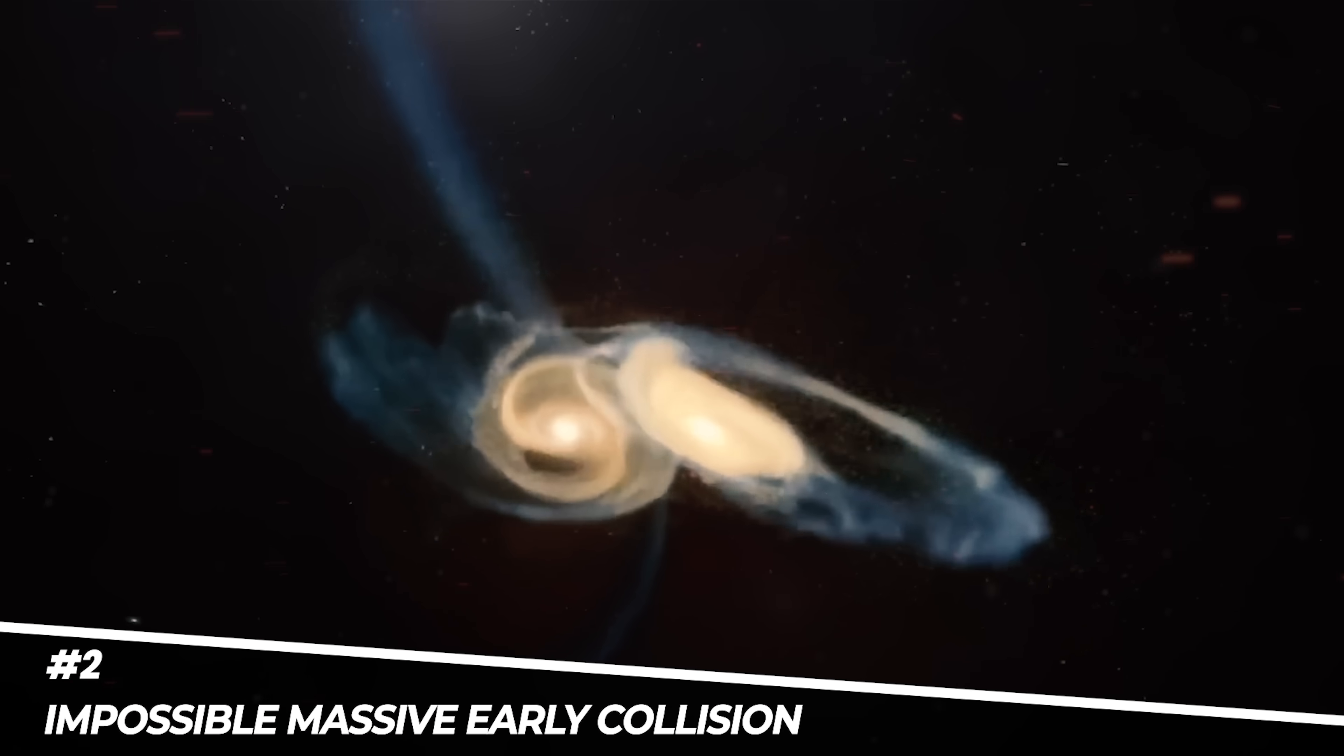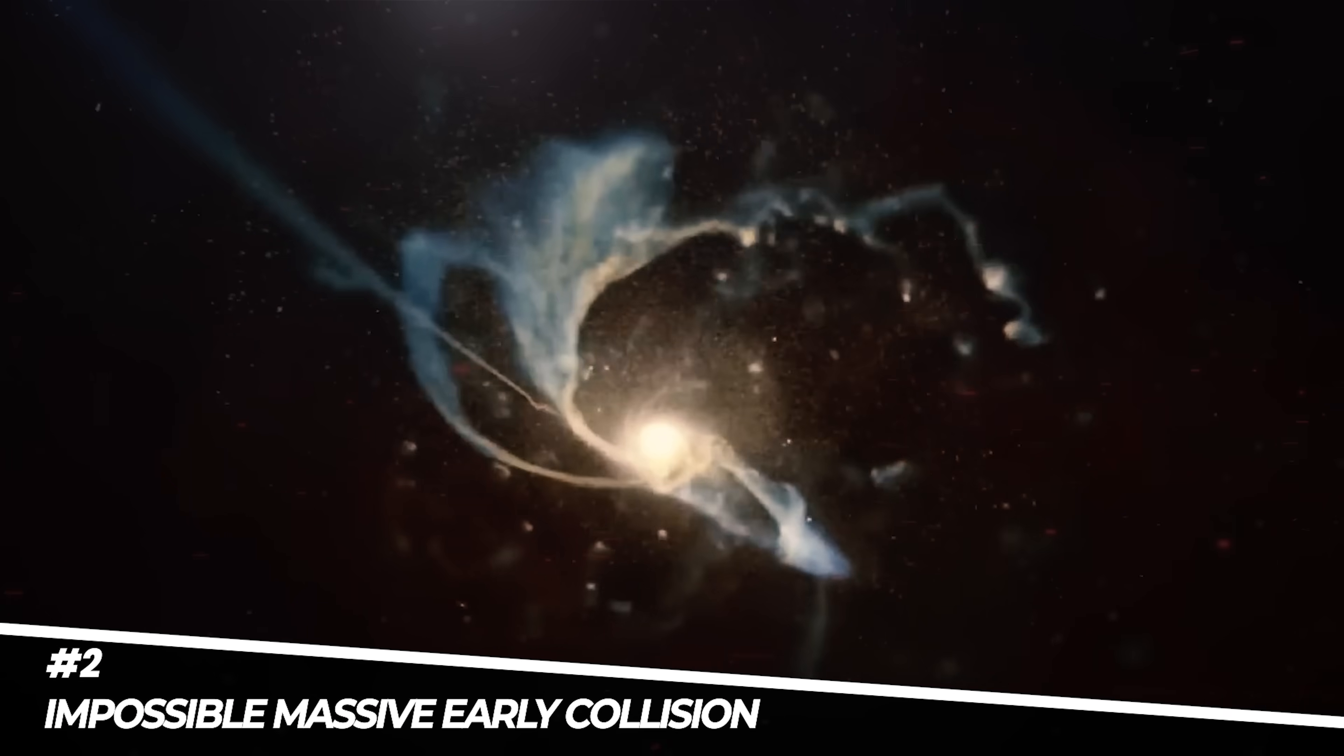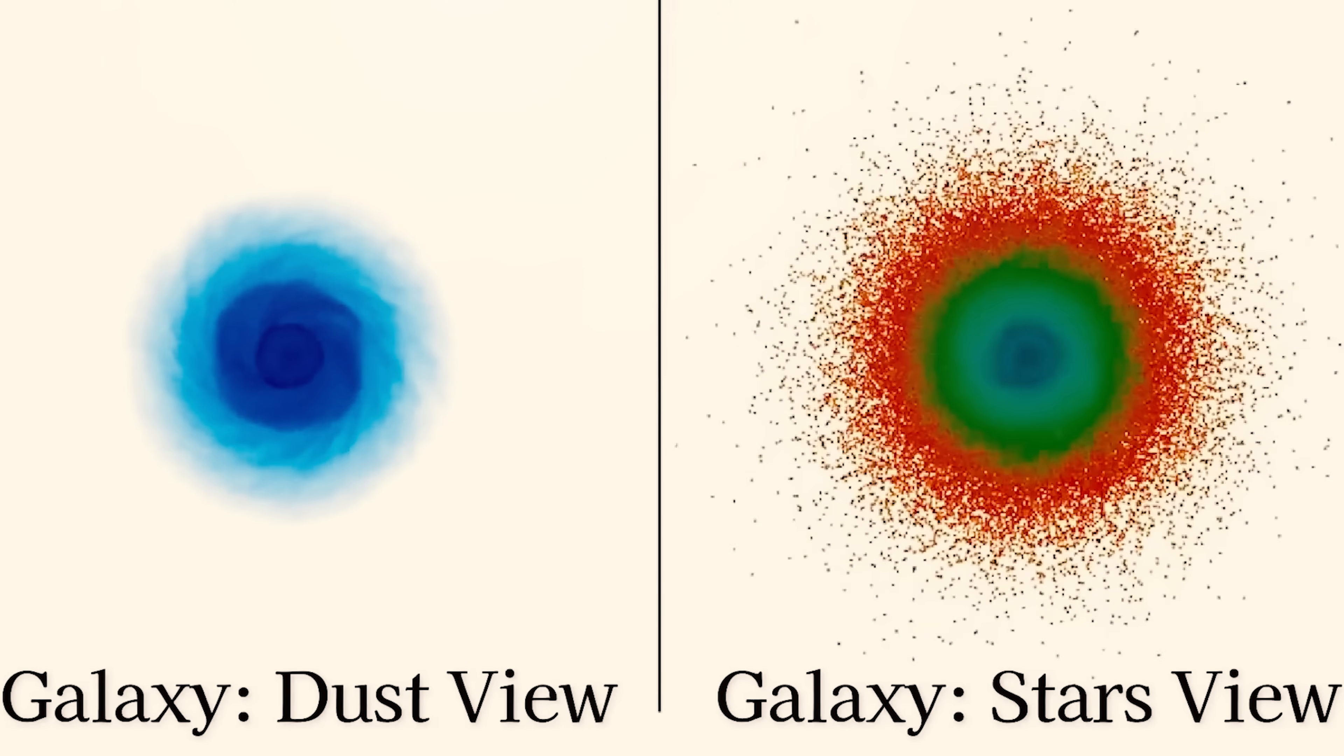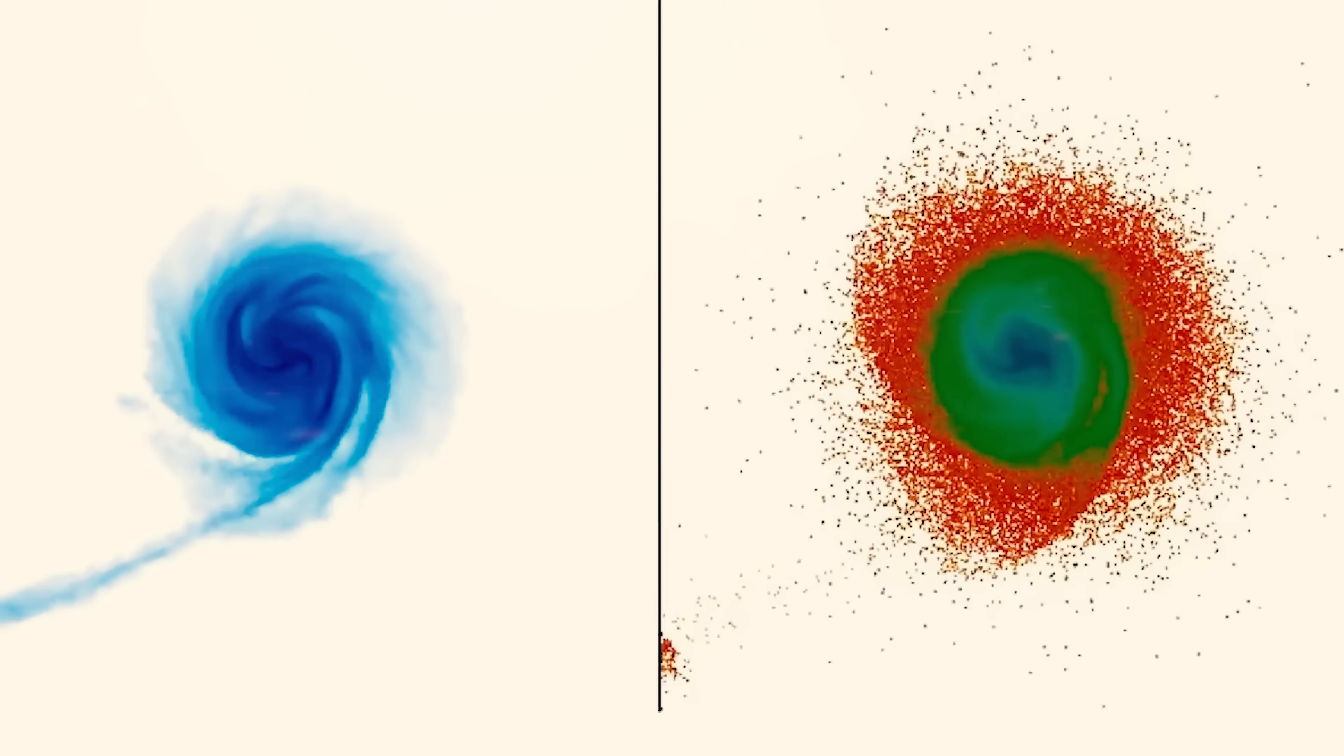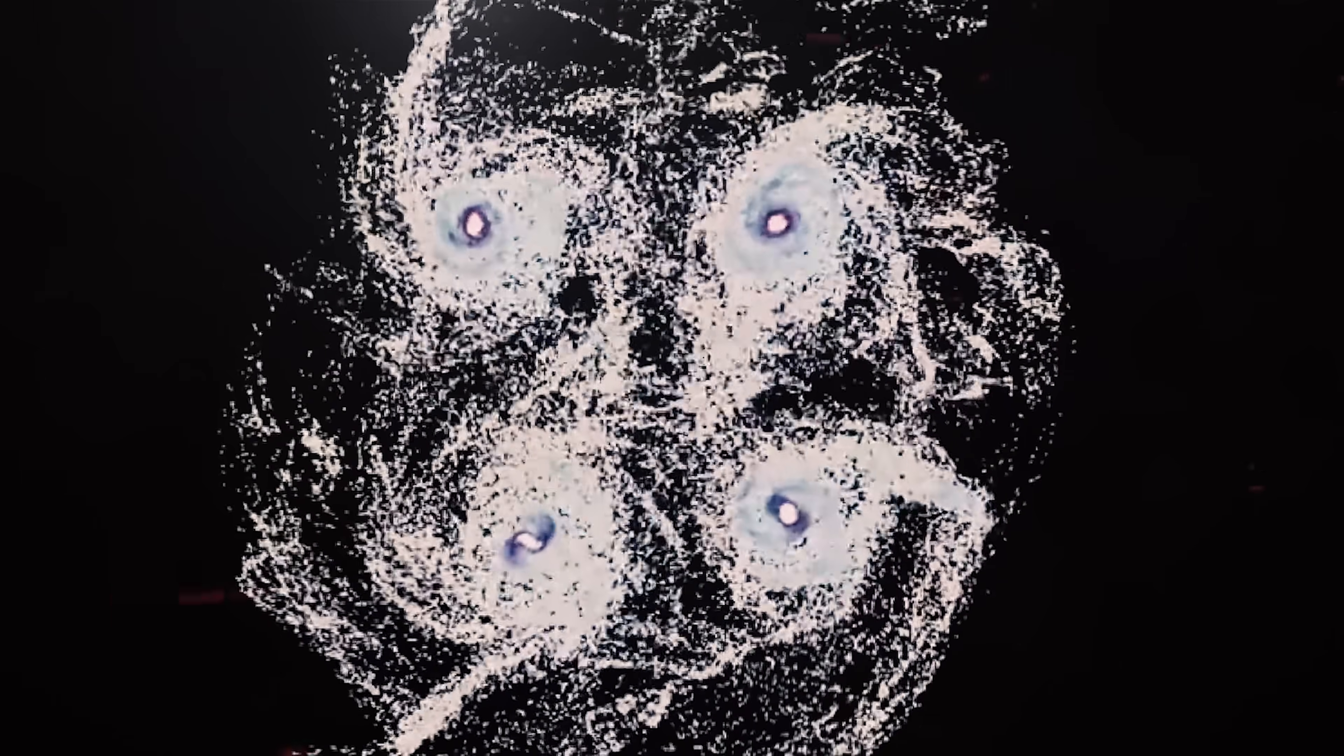Number two. Scientists just discovered two massive objects collided very early in the universe. That's right. Just when cosmologists thought they had a workable theory for when and how galaxy collisions happen in the early universe, the James Webb Telescope challenges them again.